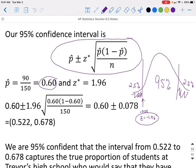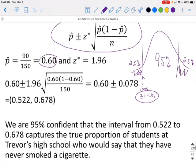That gives us an interval of 60% plus or minus 7.8%, or 52.2% to 67.8%. We are 95% confident that the interval from 52.2% to 67.8% captures the true proportion of students at Trevor's high school who would say they have never smoked a cigarette.